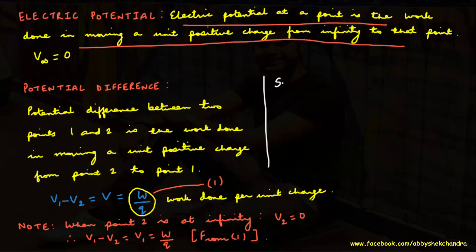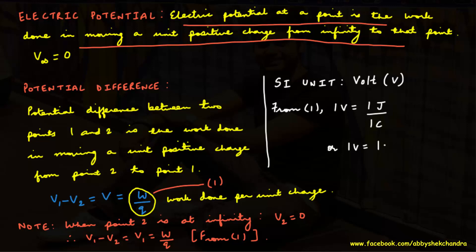The SI unit of potential and potential difference is volt, denoted by V. One volt equals one joule divided by one coulomb, or one joule per coulomb. The potential difference between two points is one volt if one joule of work is done in moving one coulomb of charge from one point to the other. Potential difference is measured by an instrument called a voltmeter, which is always connected in parallel to the element across which potential difference is to be measured.